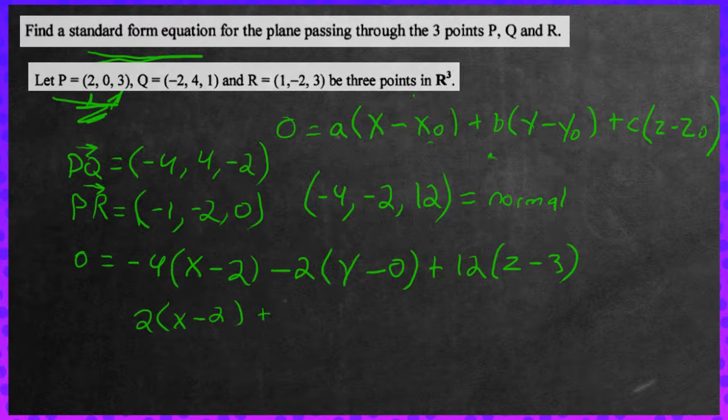And divided by negative 2, we're going to get positive Y. And Y minus 0 is nothing. So just put the Y there. Divide 12 by negative 2, we're going to get negative 6Z minus 3.